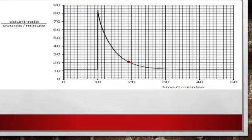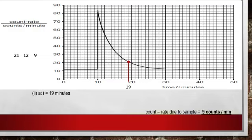Let us use the same graph to determine the count rate at 19 minutes. Let us locate 19 minutes on the graph. At 19 minutes, it gives a count rate of 21. Knowing that the 12 count rate was contributed by the background radiation, so 21 minus 12 equals 9. The count rate due to sample at 19 minutes is equal to 9 counts per minute.